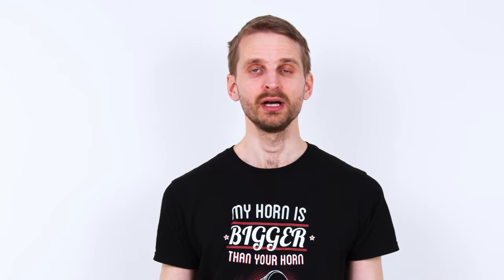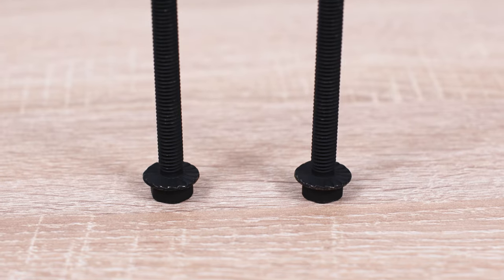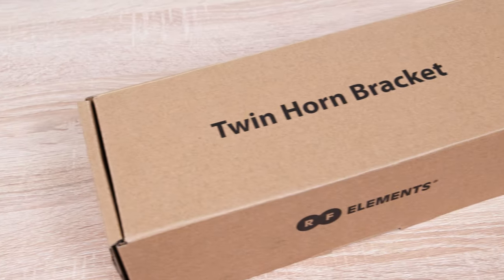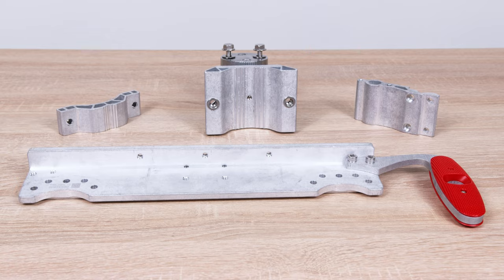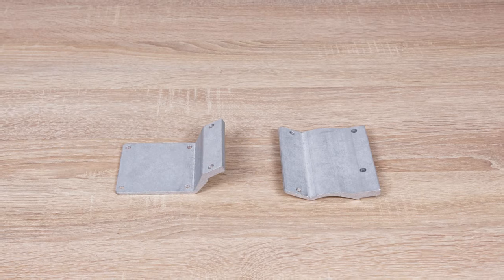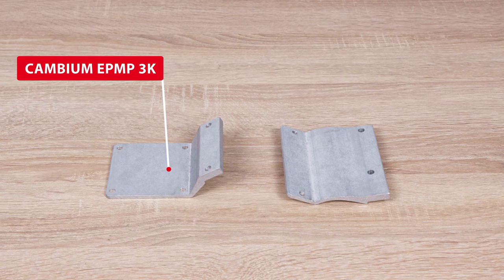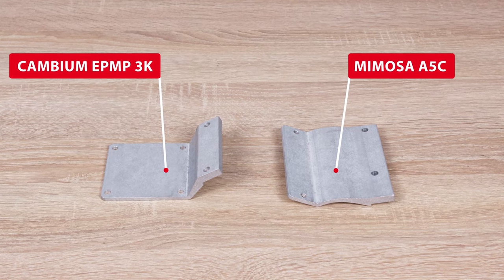Hi, I'm Mr. T, the product guy at RF Elements. In the package you will find the body of the bracket, installation hardware, and two mounts for the most common 4x4 radios, the Cambium EPM-P3000 and Mimosa A5C.